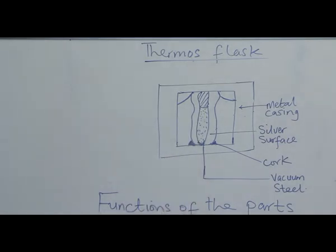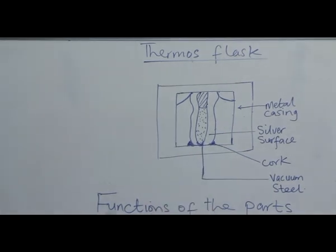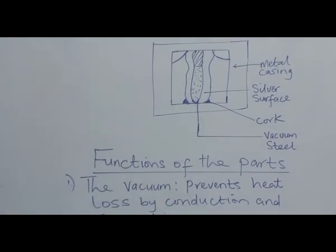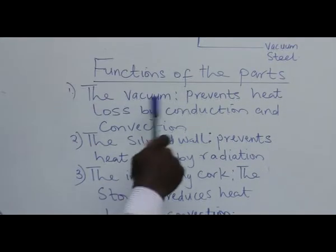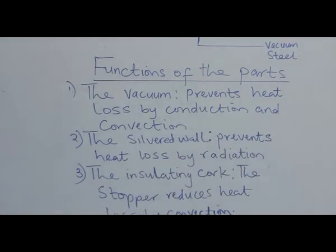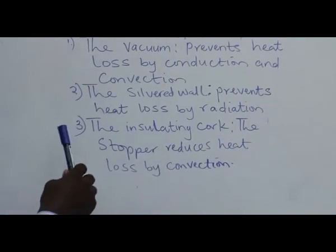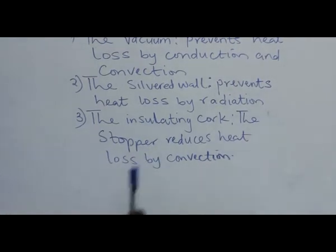The thermos flask has different parts: the metal casing, the silver surface, the cork, and the vacuum seal. The functions of these parts are as follows: the vacuum prevents heat loss by conduction and convection; the silvered wall prevents heat loss by radiation; and the insulating cork stopper reduces heat loss by convection.